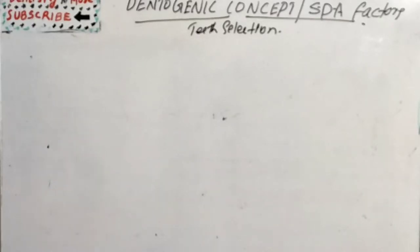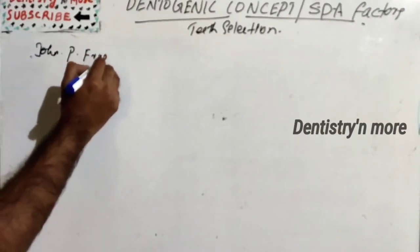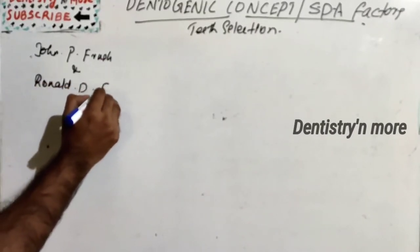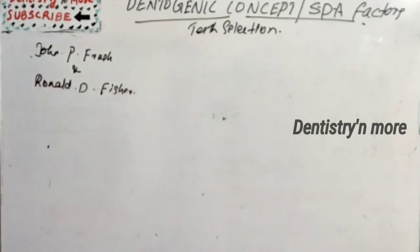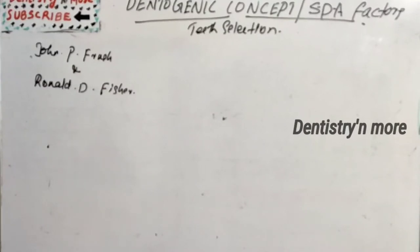The dentogenic concept was introduced by John P. Fresh and Ronald D. Fisher. These two people put forward this concept of dentogenic based on sex, age, and personality, which determine the form of tooth. The quality of masculinity or femininity, personality, and various physiological ages will be revealed in the smile of the patient.